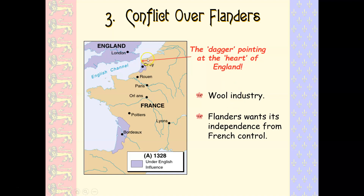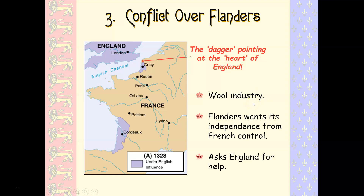This area right up here is Flanders. They were a major wool-producing area. They kind of want to get out from under the control of the French, so they're actually going to become loyal to England, and this is what's going to prompt the war.